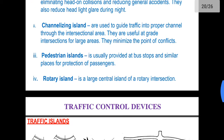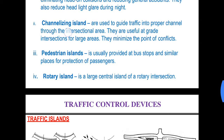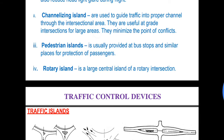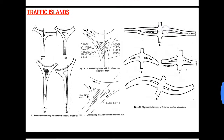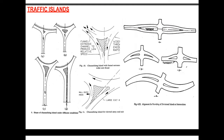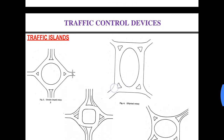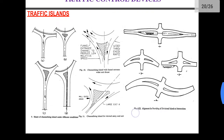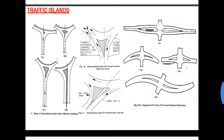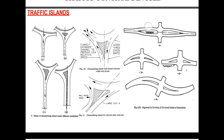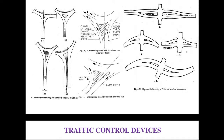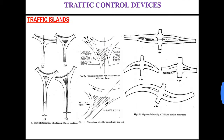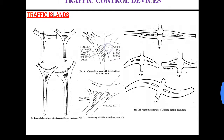Next are channelizing islands. These are used to guide traffic into the proper channel through the intersectional area. They are useful at grade intersections for large areas. They minimize the points of conflicts. Here you can see these islands over here and also this island at the center. What they do is they channelize the left-moving traffic and the right-moving traffic. By doing this, we try to reduce the number of conflict points or reduce the number of accidents.